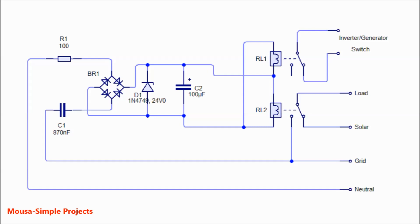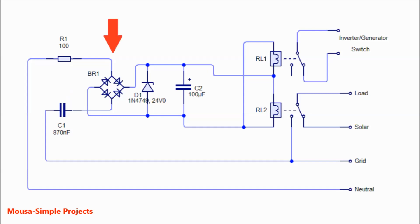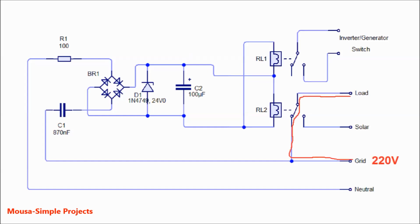This circuit consists of two relays and a transformerless power supply. The 220-volt mains voltage coming from the electric grid is connected here. A capacitor decreases the current, a bridge diode converts AC to DC, a Zener diode regulates the voltage to 24 volts, and a capacitor filters out the ripple voltage.